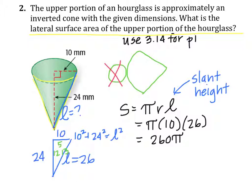And of course, that would say that our surface area is about 260 times 3.14. And that's equal to 816.4. What are our units? Our units are square millimeters. And that's the lateral surface area of this hourglass.